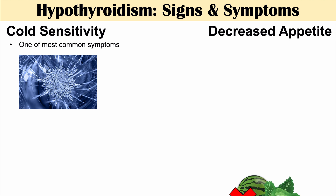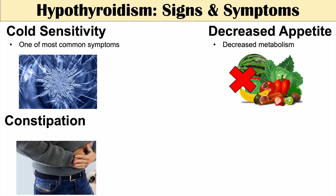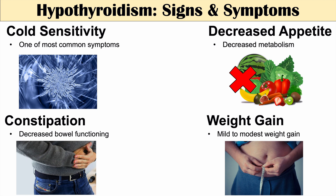Another symptom of hypothyroidism is decreased appetite, again due to decreased metabolism. We're also going to see constipation, due to decreased bowel functioning — you can think of this as decreased movement within the GI tract. And even though individuals with hypothyroidism have a decreased appetite and may not be eating as much, they can actually have mild to modest weight gain, also due to decreased metabolism.